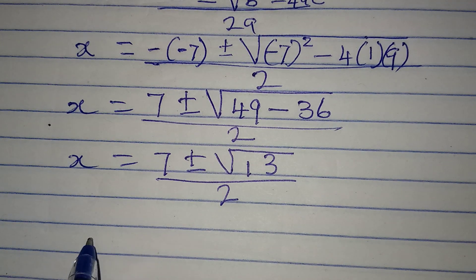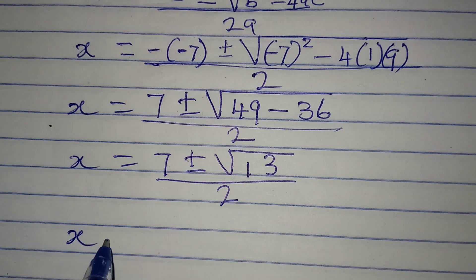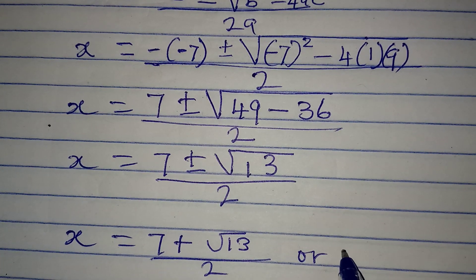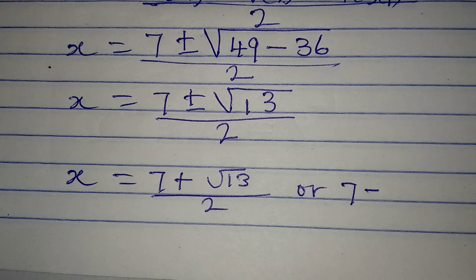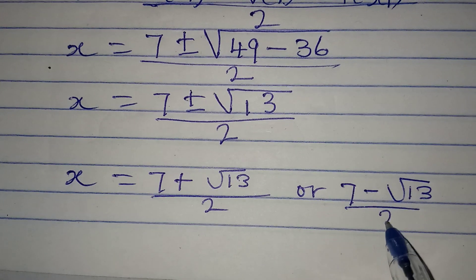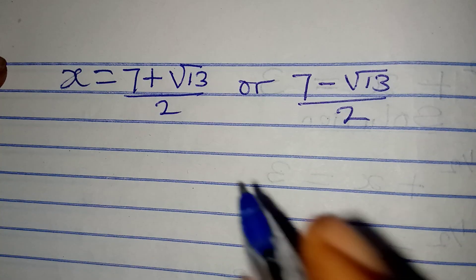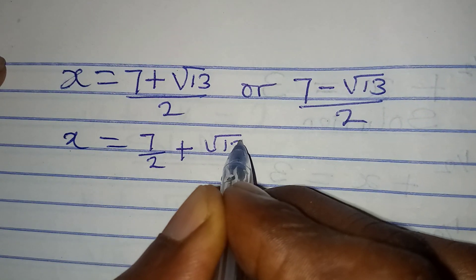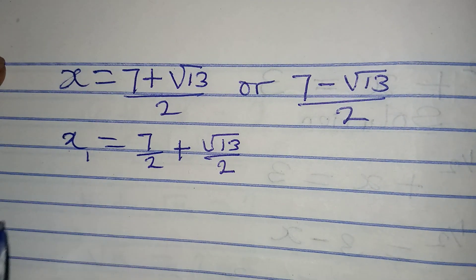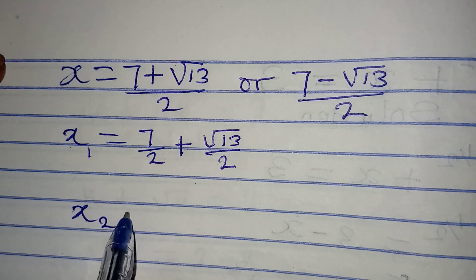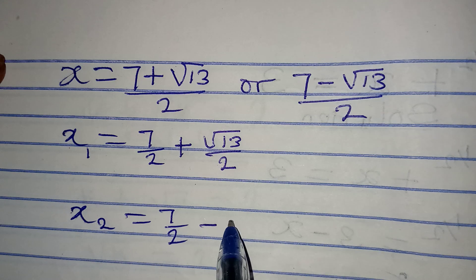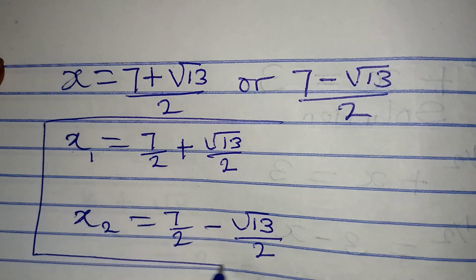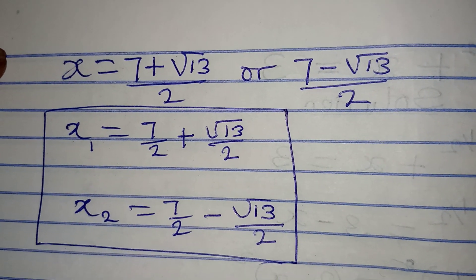This means we are going to have two values for x. x1 is equal to 7 over 2 plus square root of 13 over 2, and x2 is equal to 7 over 2 minus square root of 13 over 2. So these two are the values of x that will satisfy the given equation. Thank you very much, thank you for watching.